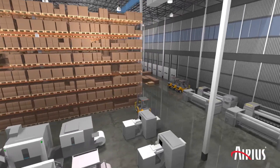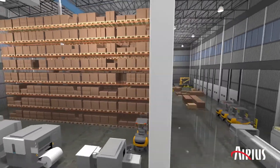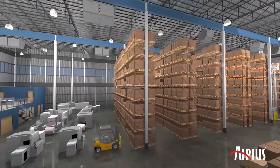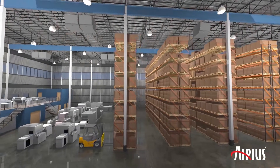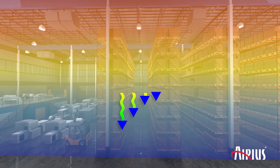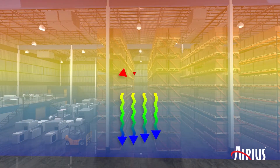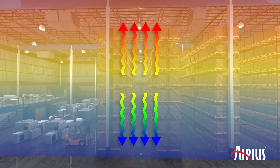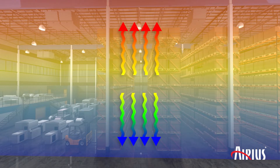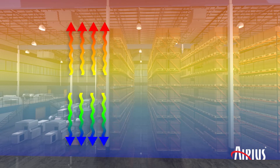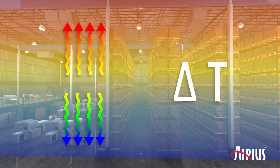Have you ever climbed a ladder indoors and noticed how much warmer it gets as you get closer to the ceiling? Temperature stratification occurs when cooler, denser air sinks to the floor and warmer, lighter air rises to the deck. This results in a temperature gradient between the floor and the ceiling, which we call delta T.